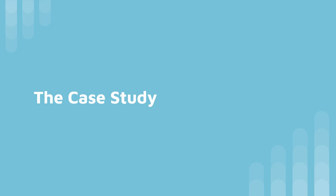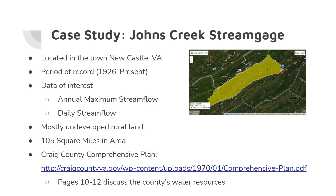Next, we're going to go over the case study. Our case study is going to be focusing on Johns Creek in New Castle, Virginia. The period of record is from 1926 to the present, and our data of interest for the site are going to be the annual maximum stream flow data used for our flood frequency analysis, and daily stream flow data for our low flow frequency analysis. A characteristic of this area is that it is mostly undeveloped rural land, about 105 square miles in area. Here's a link to the Craig County Comprehensive Plan, where pages 10 through 12 discuss the county's water resources, which would include Johns Creek.